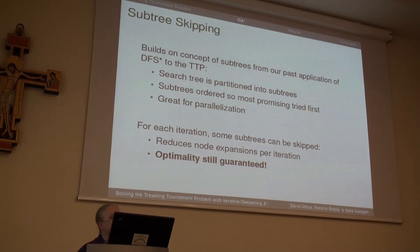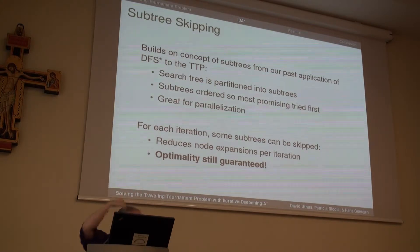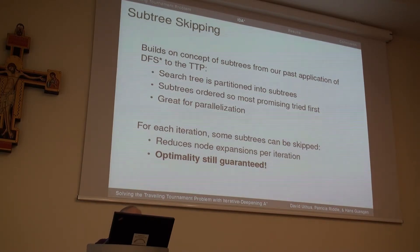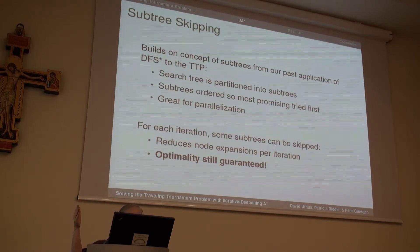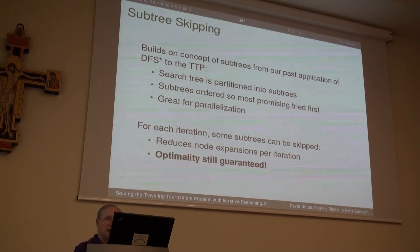The third technique is subtree skipping, which runs in parallel. You take the first x levels of the search tree, make each one a subtree, and run them on separate computers. Subtree skipping allows us to say that a subtree has already passed our current F bound, so we don't need to expand it at all. This prunes many subtrees entirely and reduces node expansions per iteration.